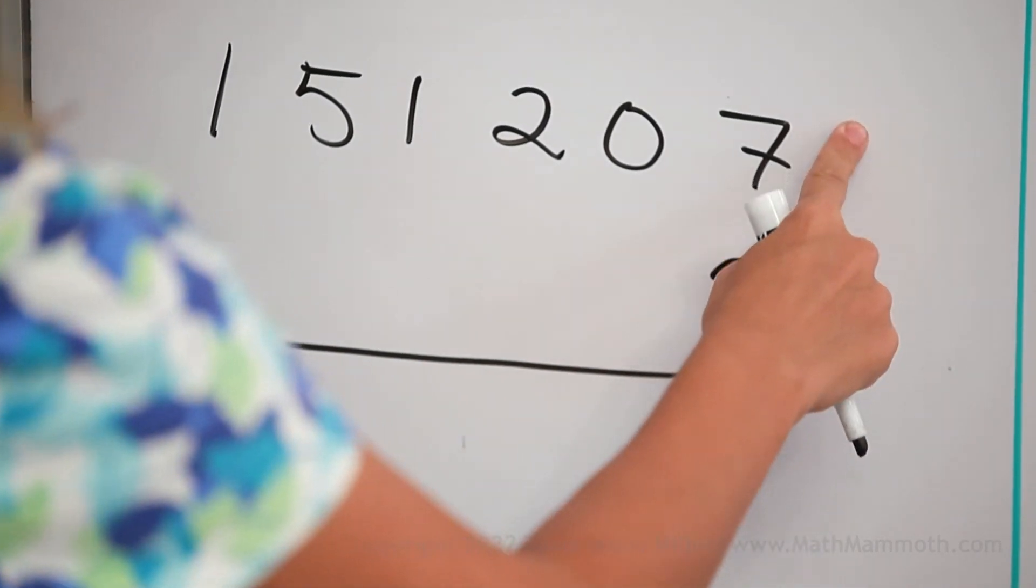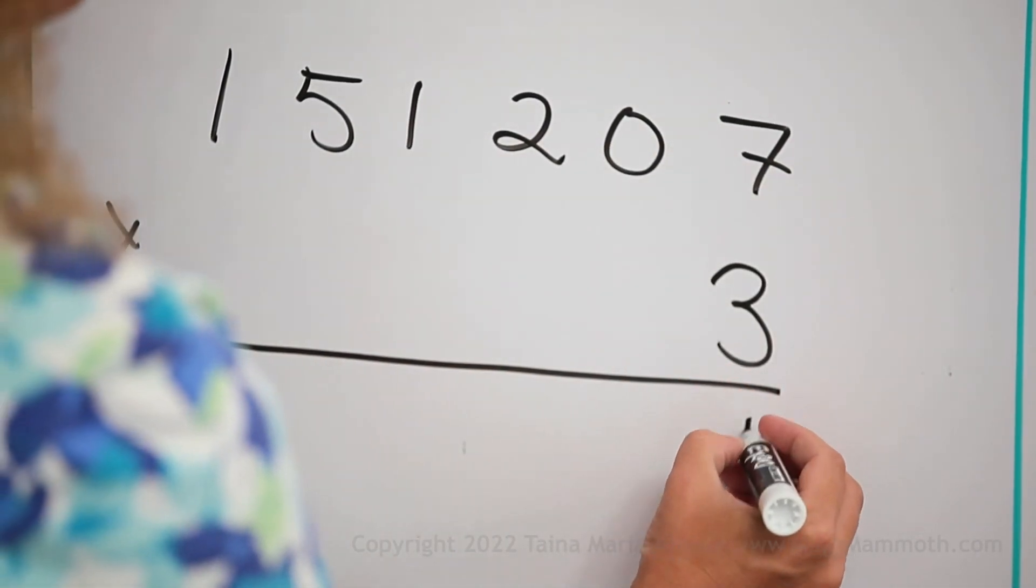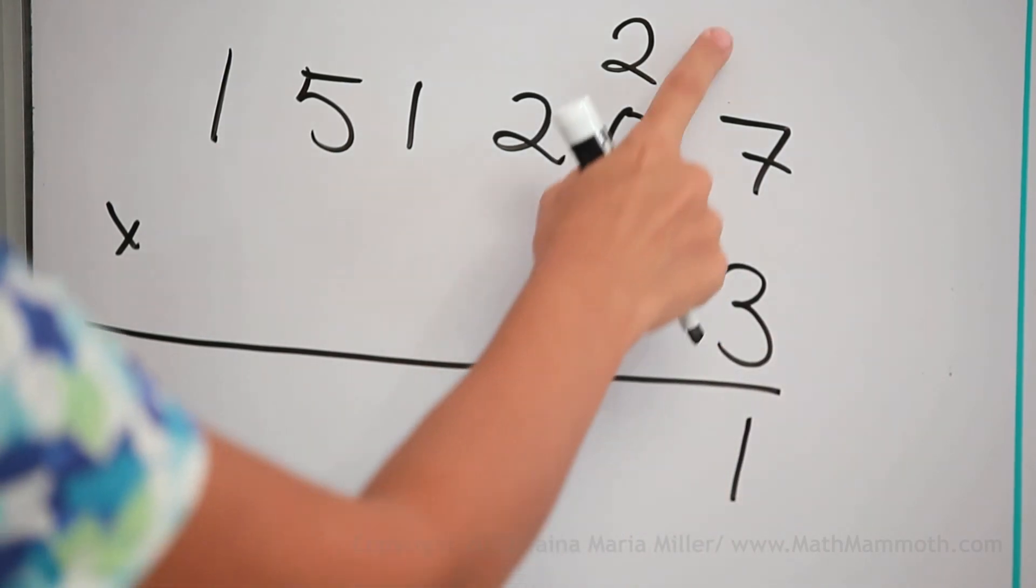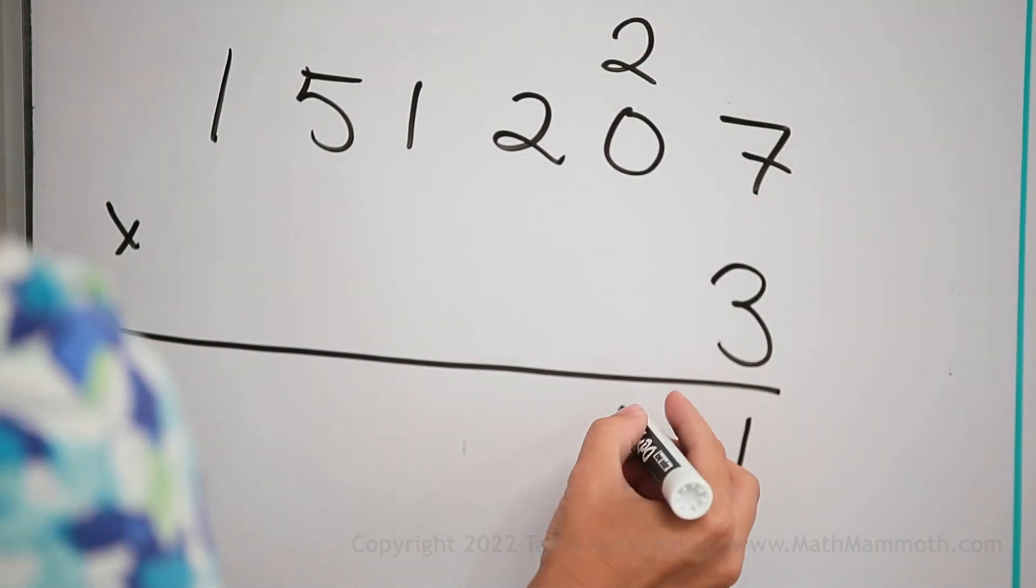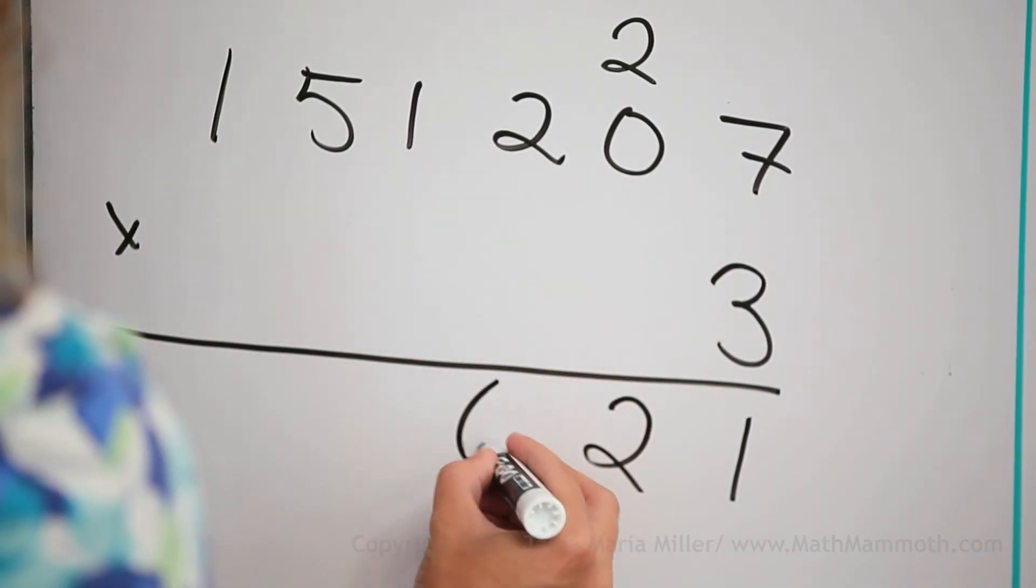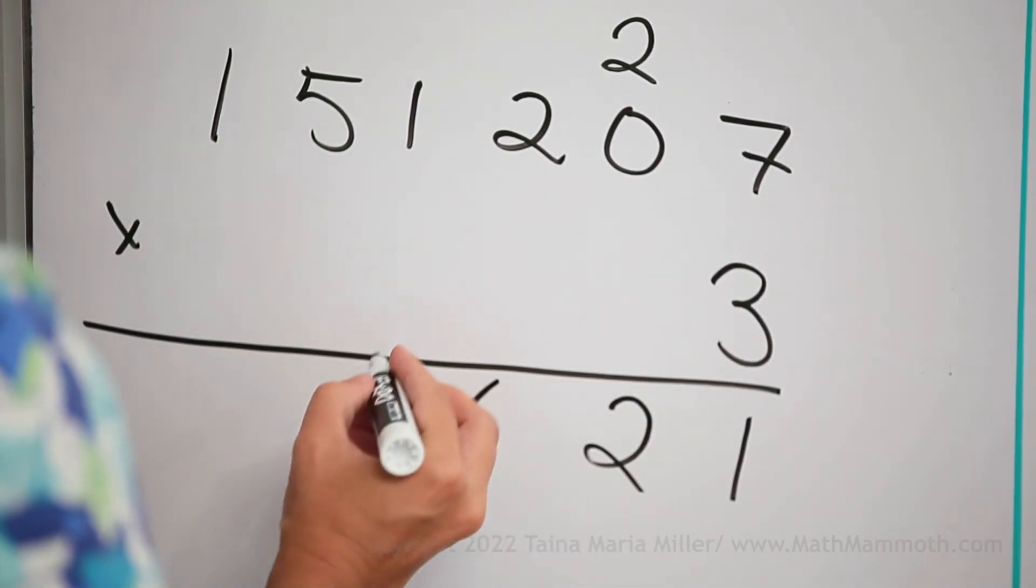Okay, 3 times 7, 21. 3 times 0, plus 2. That will be 2. 3 times 2, 6. 3 times 1, 3. That is really easy.